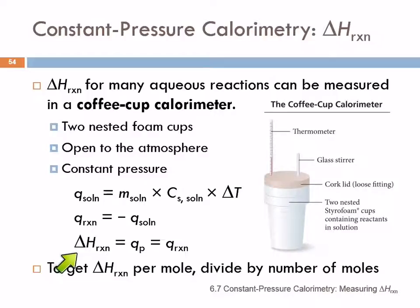At constant pressure, delta H for the reaction, the change in enthalpy for the reaction, is equal to Q at constant pressure, which here equals Q for the reaction. So we can get the heat of the reaction per mole by just calculating this Q and dividing by the number of moles.